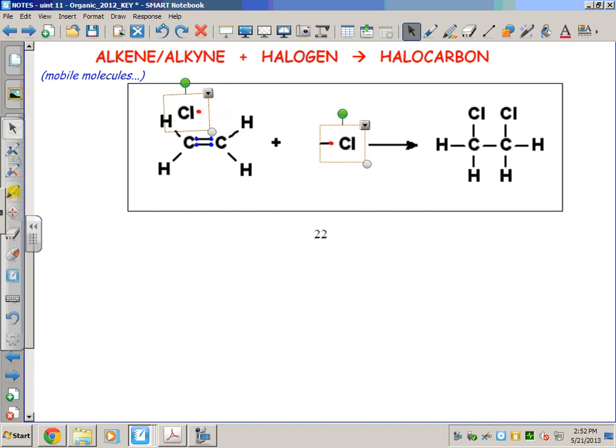So if I work my way back to the beginning, I start out with a diatomic halogen just like I had in the substitution, but I have an alkene or an alkyne—a hydrocarbon with a multiple bond. My product is larger, meaning it contains more atoms. On the left, my hydrocarbon had a total of six atoms. On the right, my halocarbon has a total of eight. And those are the ways you can tell the difference between a substitution reaction and an addition reaction.